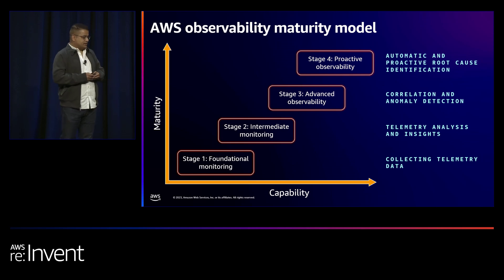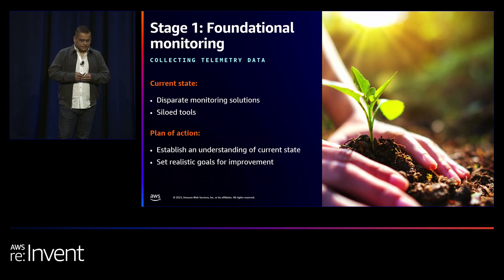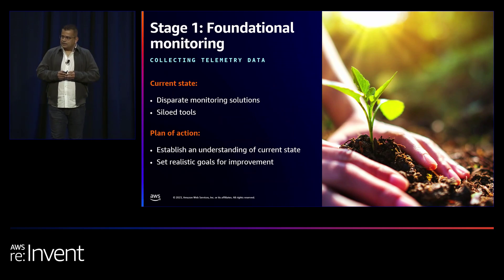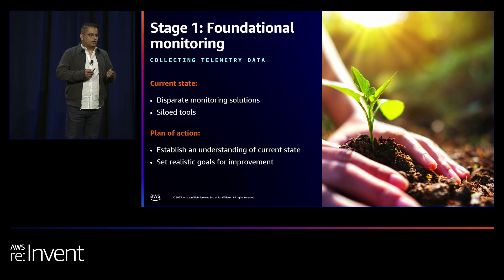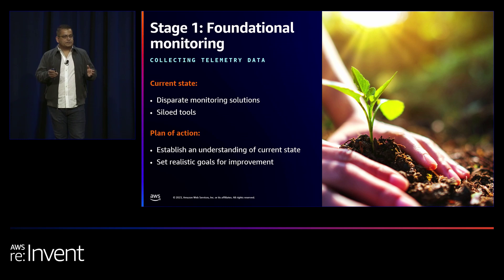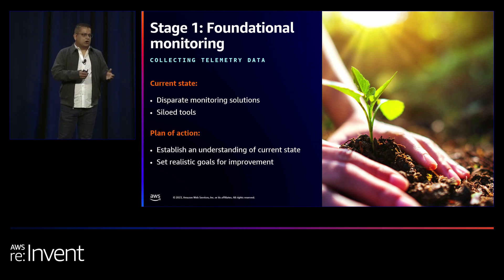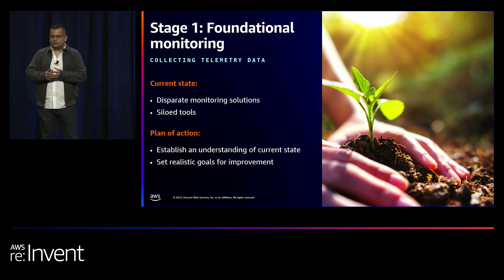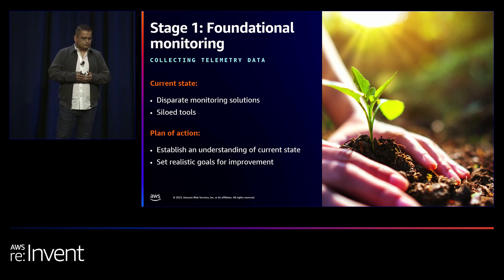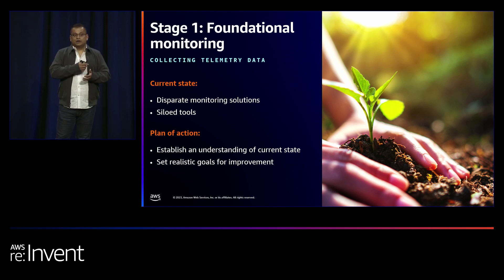We've heard from customers that they're looking for prescriptive guidance to monitor their applications but don't know where to start. They want to build observability practices and culture in their organizations. So we've developed the AWS Observability Maturity Model. As your usage with AWS grows, observability is supposed to grow linearly with that, but in reality it doesn't. This essential framework helps you and your organization find out where you are so you know where to go to improve observability maturity.